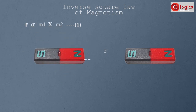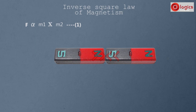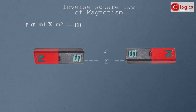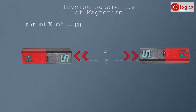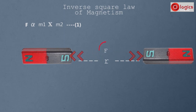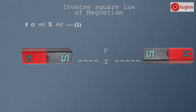Attractive or repulsive forces also depend on the distance between the poles of magnets. Let us say distance is R. If distance is less, attractive force is more; if distance is more, force is less. That means force is inversely proportional to distance. By definition, force is inversely proportional to the square of the distance between them. So F is inversely proportional to R square. This is equation 2.